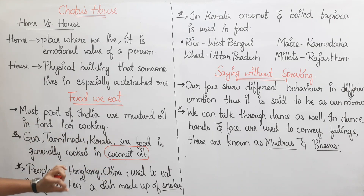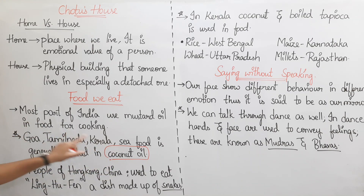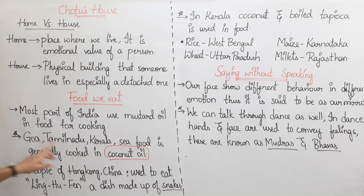The answer to where coconut oil is used for cooking is: Goa, Tamil Nadu, and Kerala.